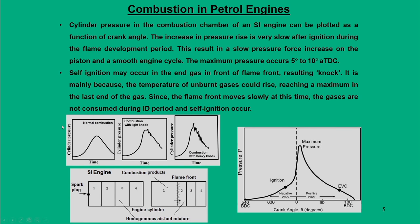An important phenomenon in spark ignition engines is knocking. In normal combustion, the flame front initiated in zone 1 progressively burns the charge in subsequent zones. However, due to a rise in pressure or temperature in zone 3 or 4 — not due to the flame front but due to self-ignition — disturbances in the pressure pulse arise, typically called knock.